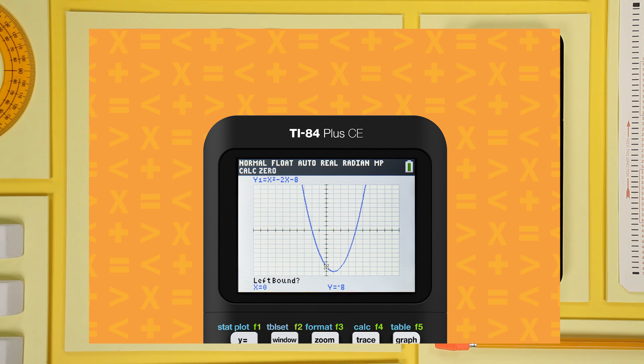Now, let's find the x-intercepts. It looks like the left intercept is close to negative 2. Let's give the calculator some boundaries to help find the precise value.